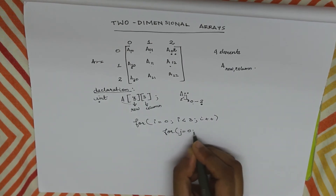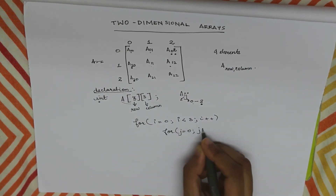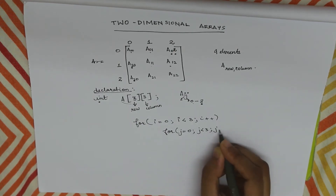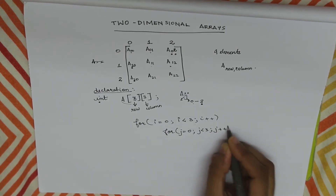j equal to 0, j less than 3, j plus plus.